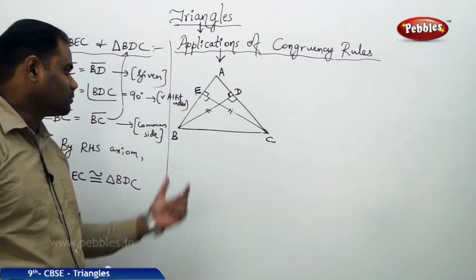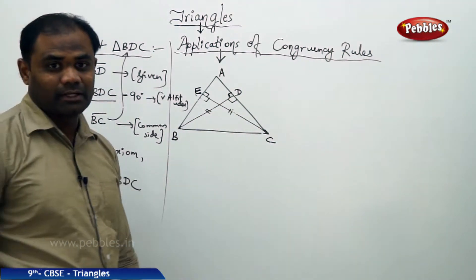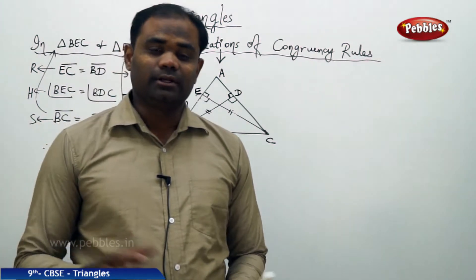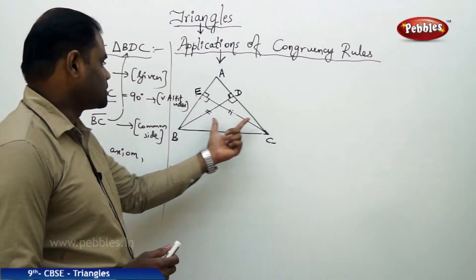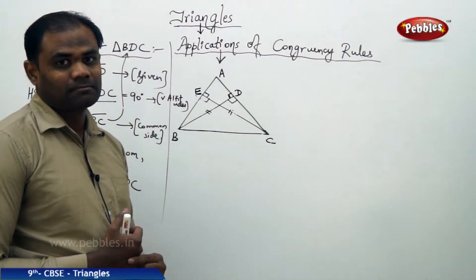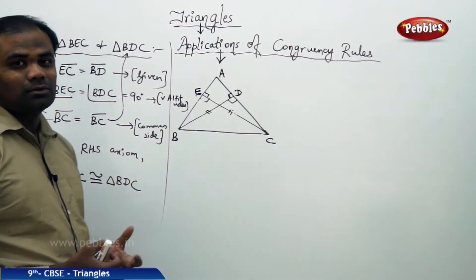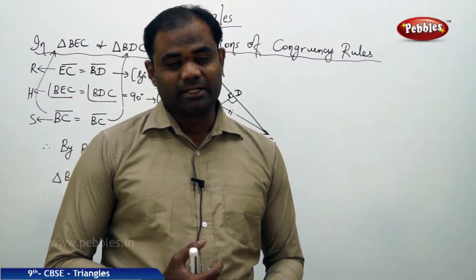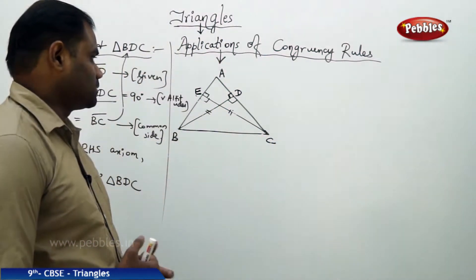By RHS axiom, triangle BEC is congruent to triangle BDC. Therefore, when I prove that the two triangles BEC and BDC are congruent, it means the two triangles are equal in all respects. We utilize this congruency now to prove that the triangle ABC is isosceles. So let's see how we can prove the isosceles property.